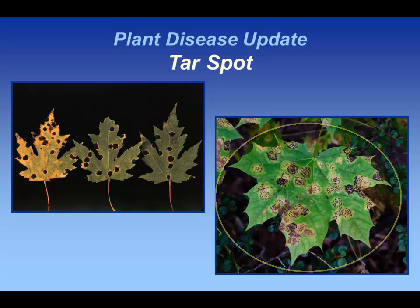Our major concern here is that with this new species of the tar spot organism here in Wisconsin, whether or not this might eventually jump to native species of maples, something like sugar maple. So one of the things we're requesting folks do is if you start to see these more diffuse looking tar spot symptoms on sugar maple, send in a sample to our clinic for identification.